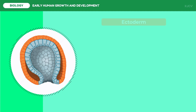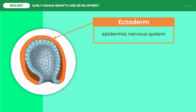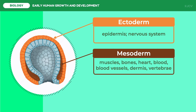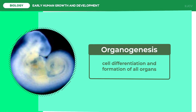The ectoderm is the outermost layer of the gastrula and will form the epidermis and the nervous system. The mesoderm is the middle layer and will form the muscles, bones, heart, blood, blood vessels, dermis, and vertebrae. The endoderm is the innermost layer and will form the digestive and respiratory epithelia, pancreas, and liver.